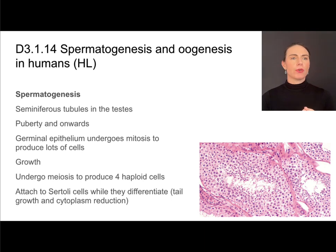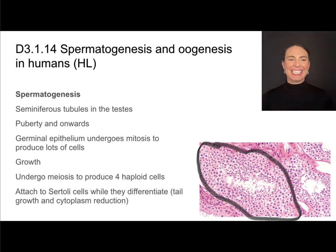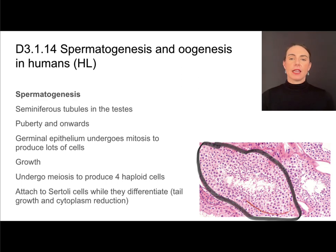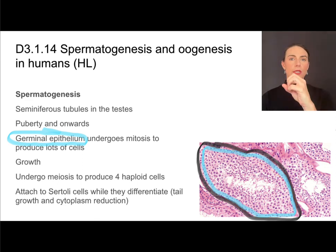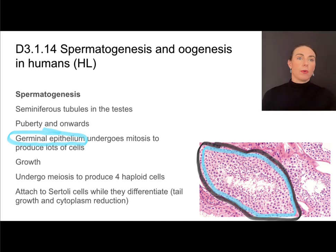If we look at a cross section of one seminiferous tubule, this process will occur from puberty onward — spermatogenesis for males starts in puberty. The cells lining the seminiferous tubules are called the germinal epithelium, located around the periphery. These germ cells can do mitosis or meiosis. They'll undergo mitosis many times to produce a lot of cells, those cells will grow, and then during puberty, instead of undergoing mitosis, they will undergo meiosis to produce four haploid cells.